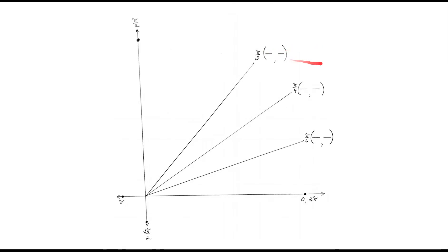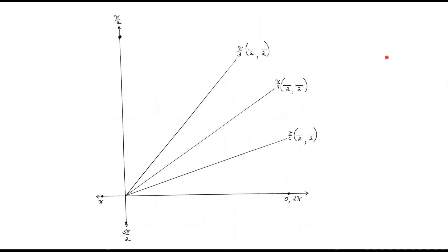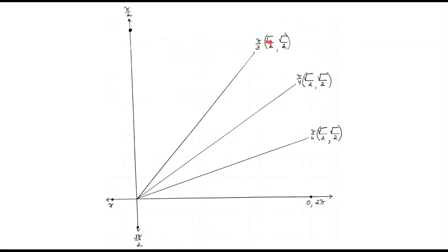Then we're going to draw in the coordinates, leaving a spot for our cosine and sine for each of those angles. Then we're going to put a 2 in the denominator for all the coordinates. Then we're going to put a radical in the numerator for all the coordinates.